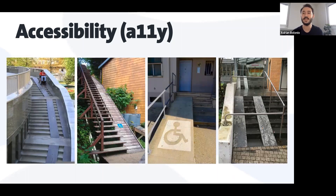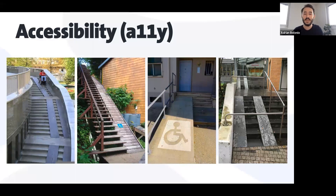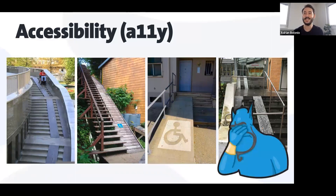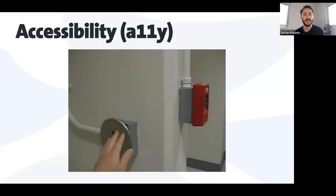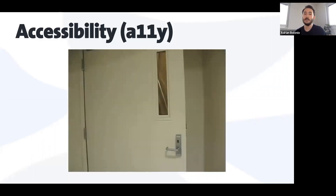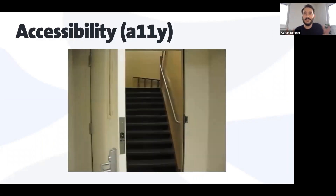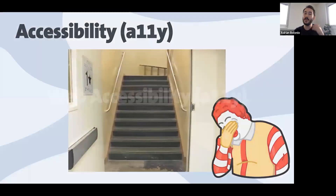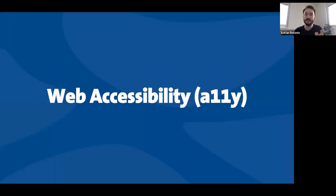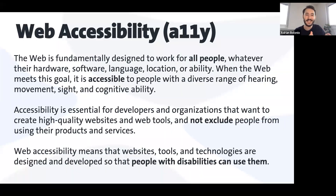Why is it so obvious in the real world that certain situations are completely wrong? In the first two pictures there is a very steep ramp; there are stairs at the end of the ramp in the third picture; and in the fourth picture there's a ramp that is totally unusable. In another situation, someone comes with a wheelchair, pushes an accessibility button, the door opens automatically — but surprise, there are stairs. It's so obvious this is wrong, but when we move to the online world it's not so obvious.